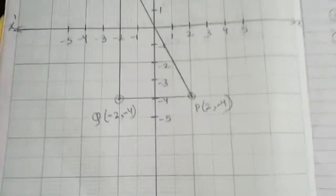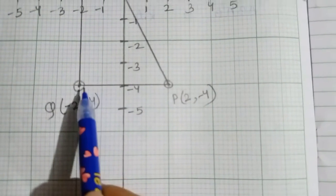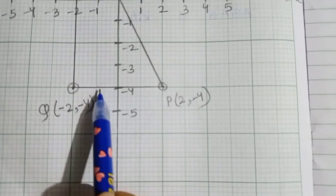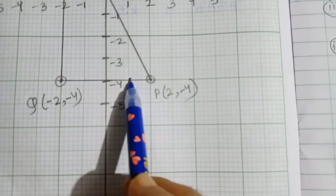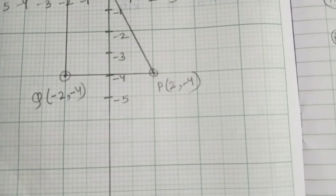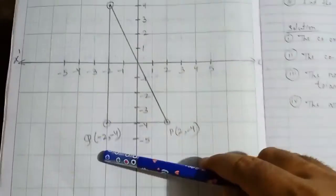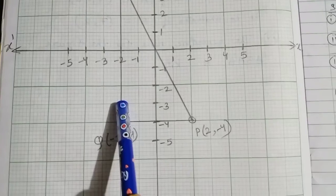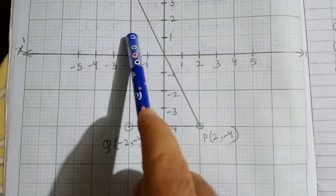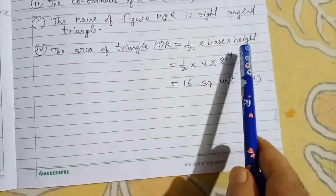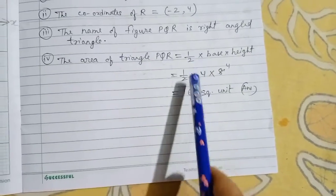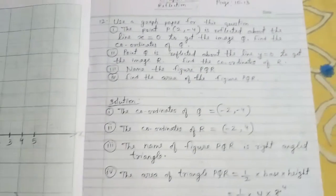Count the base: from one point to the other is 4 units, so base = 4. Count the height (the standing part): 1,2,3,4,5,6,7,8 units, so height = 8. Area = ½ × 4 × 8 = 16 square units. These are the two questions discussed today — please practice them. Thank you.